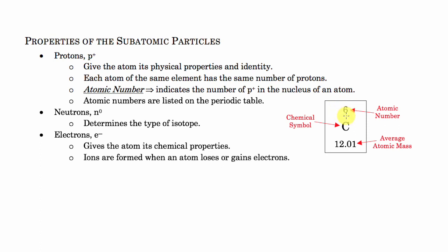On most periodic tables, you're going to see the symbol for the element and also the atomic number, which is usually on the top. On the bottom is the average atomic mass — we're going to get to that in a future lesson. For right now, we're just focusing on the atomic number and the neutrons.